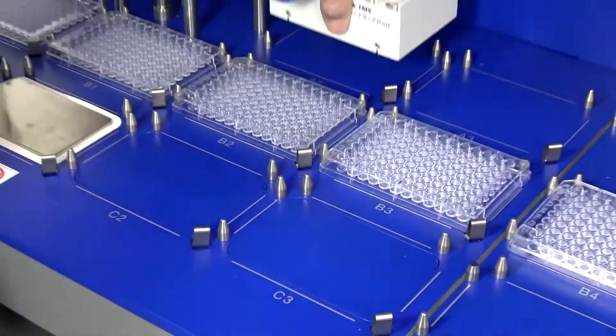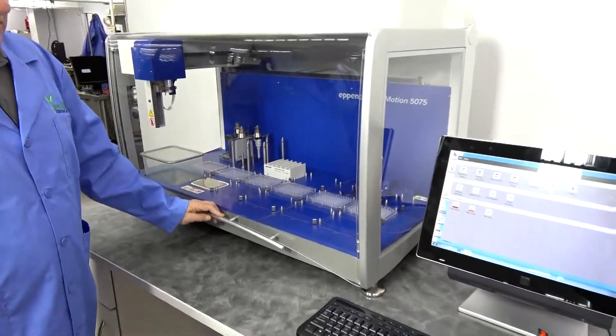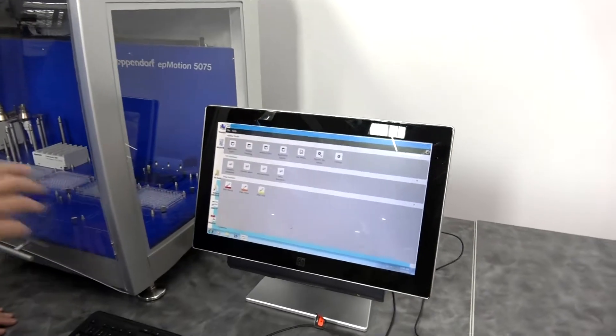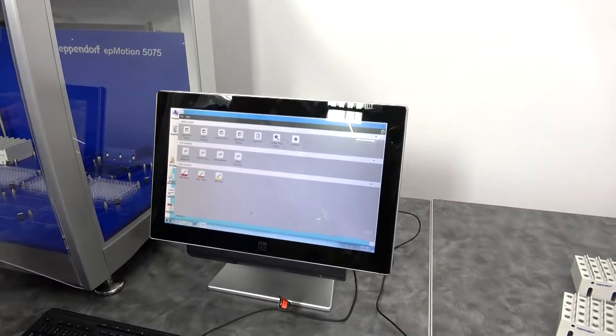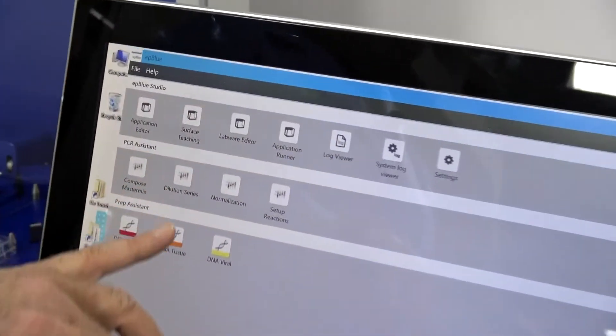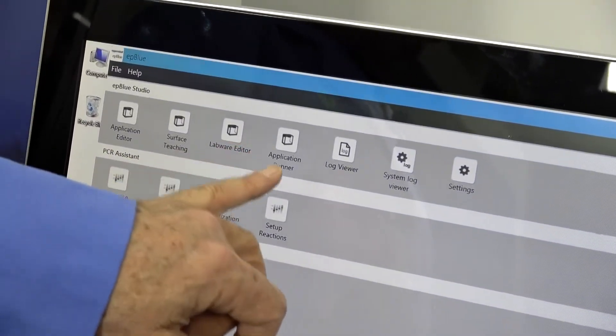We'll talk about that in the software, which as I mentioned is EP Blue. We're running it right now in a user/administrator mode. If you run it in a user mode, some of the applications that you're seeing here won't show up, such as the application editor, but the application runner will.